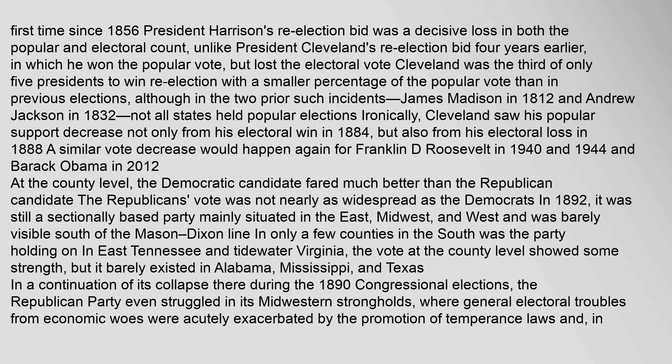At the county level, the Democratic candidate fared much better than the Republican candidate. The Republicans' vote was not nearly as widespread as the Democrats' in 1892 — it was still a sectionally based party mainly situated in the East, Midwest, and West, and was barely visible south of the Mason-Dixon line. The Republican Party even struggled in its midwestern strongholds, where economic woes were acutely exacerbated by the promotion of temperance laws and, in Wisconsin and Illinois, aggressive support for English-only compulsory education laws.